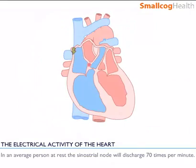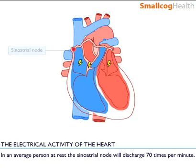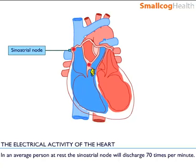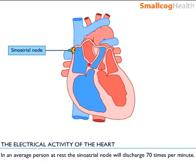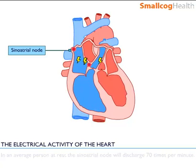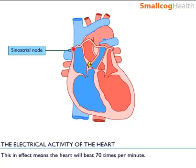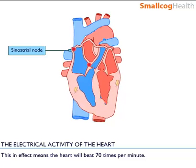In an average person at rest, the sinoatrial node will discharge 70 times per minute. This in effect means the heart will beat 70 times per minute.